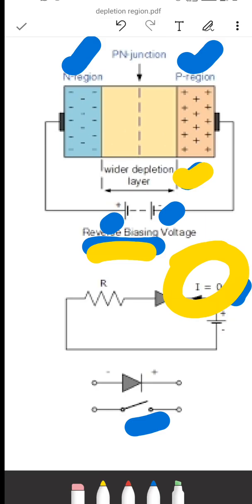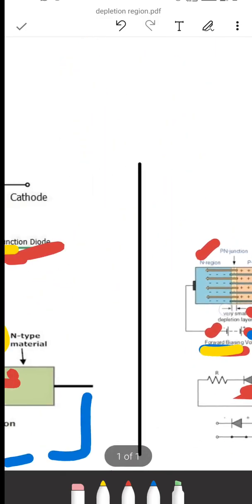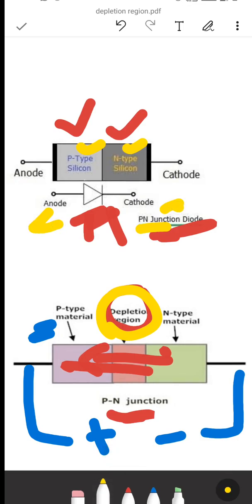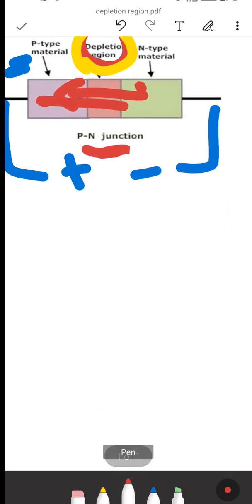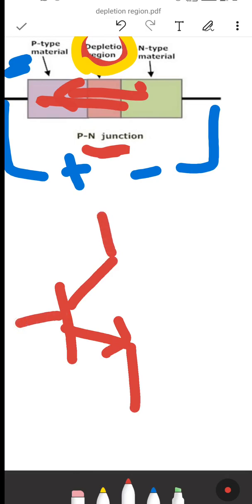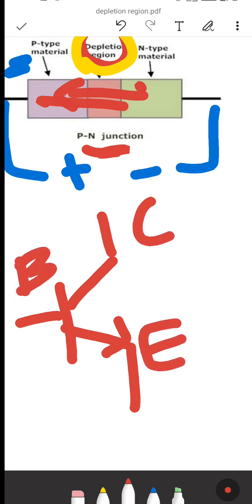A diode has two terminals: one anode and one cathode. Now, if we consider a transistor, it has three terminals: base, emitter, and collector.